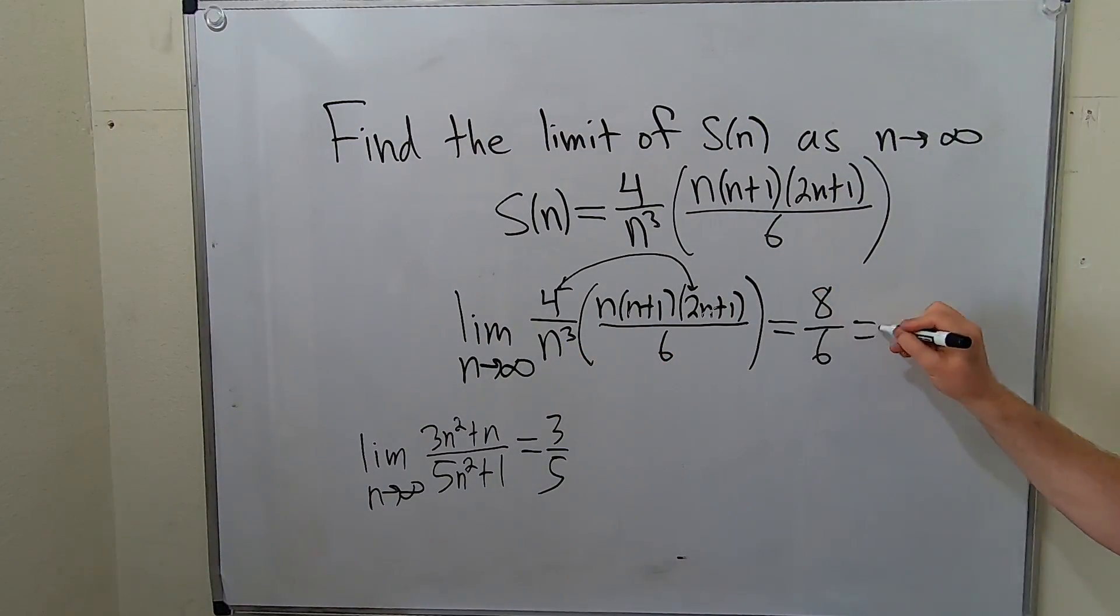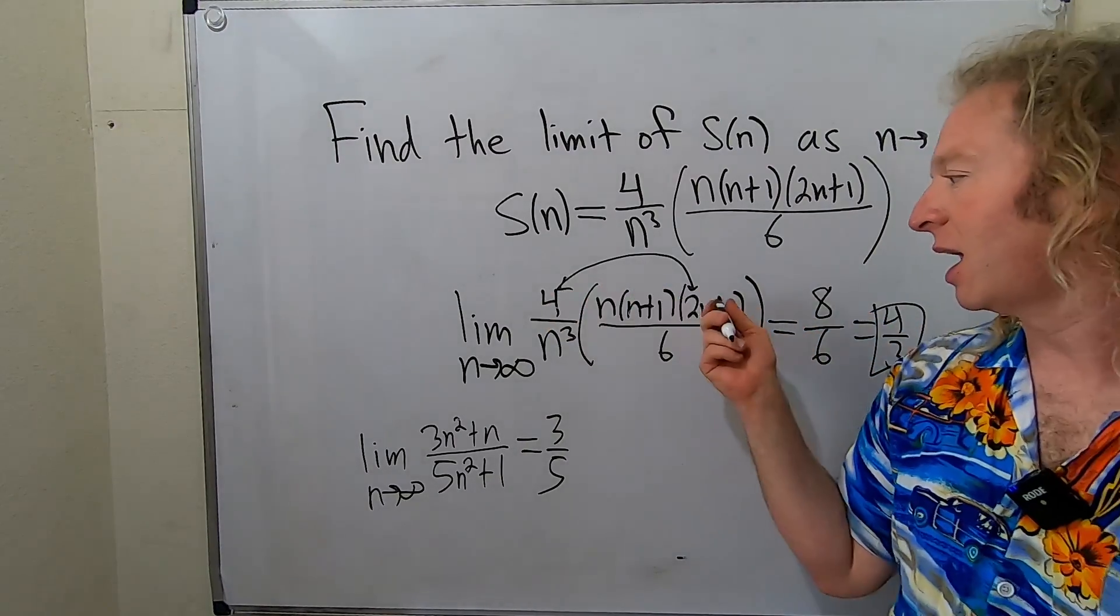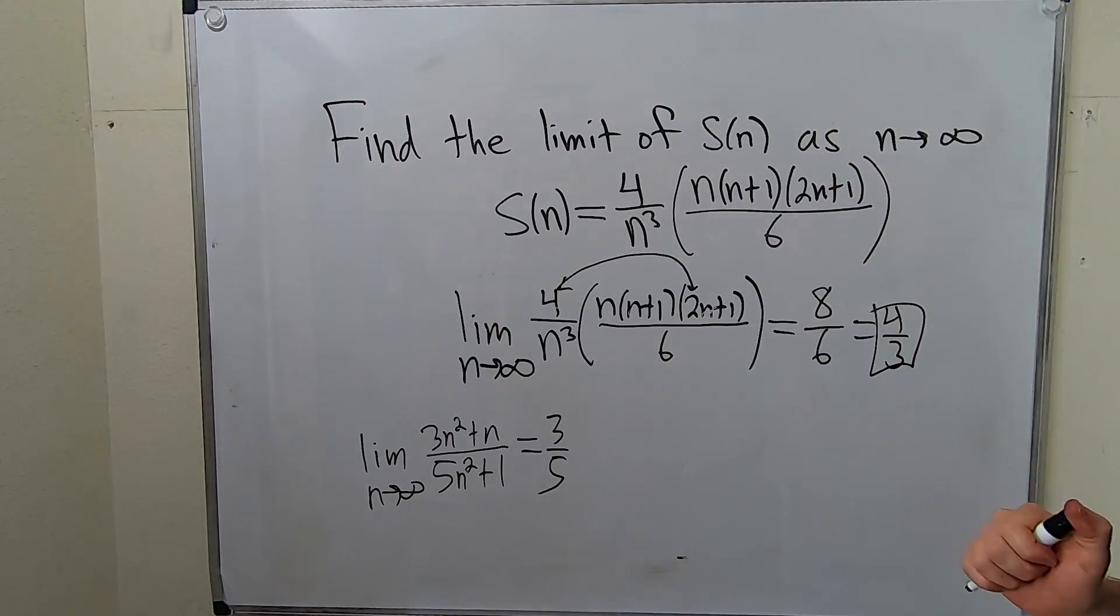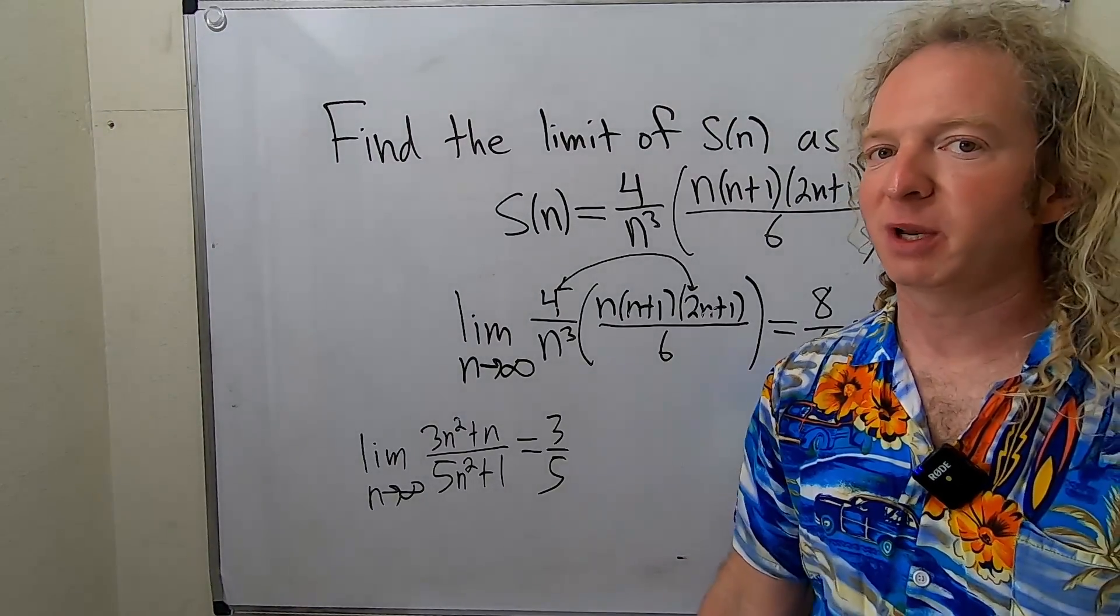So this will be 4 over 3, and that would be the final answer. So you can just look at the highest power and multiply the numbers, and that will always give you the answer. I hope this video has been helpful.